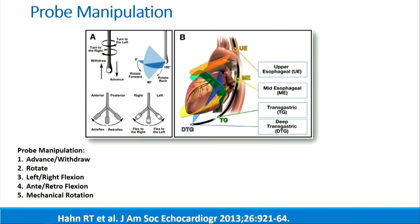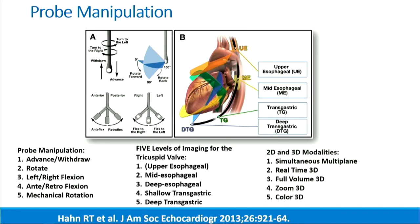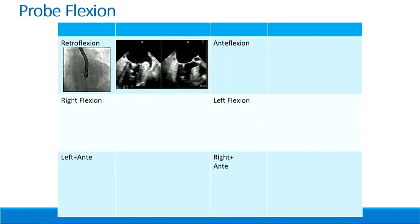We've got a lot of options with our transesophageal imaging through probe manipulation: we can withdraw, rotate, use lateral flexion, anti-retroflexion, and mechanical rotation. We have a lot of different views. Only four views were advocated by the current guideline, but we are updating the guideline within the next year to add the deep esophageal view. We also have multiple different modalities — both 2D and 3D — all of which have to be used for this very complex anatomy.